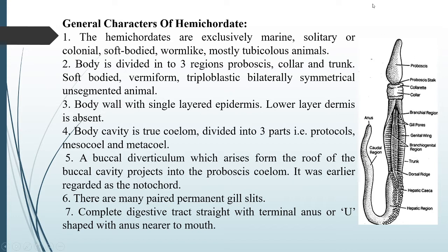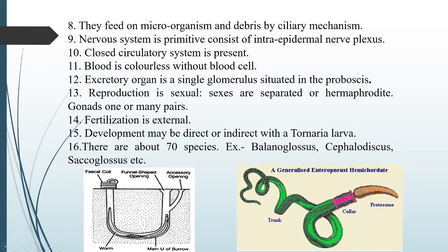Hemichordates are exclusively marine, meaning they all live in seawater. They may be solitary — living singly — or colonial, remaining in a group. These are soft-bodied animals with a worm-like rounded body, and most are tubiculous animals. Tubiculous means tube-dwelling — they live in tube-like structures made of sand.